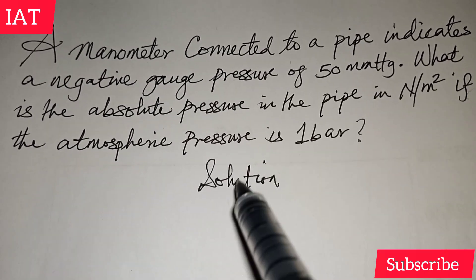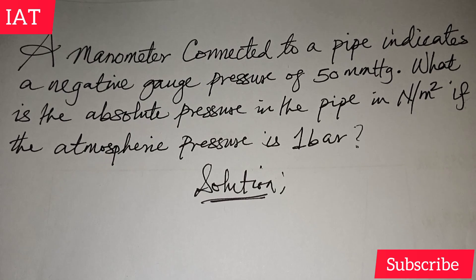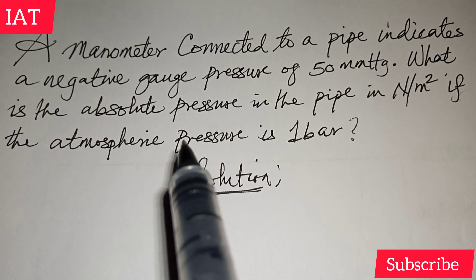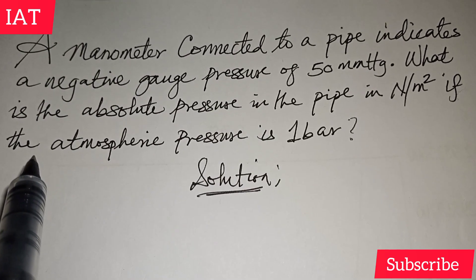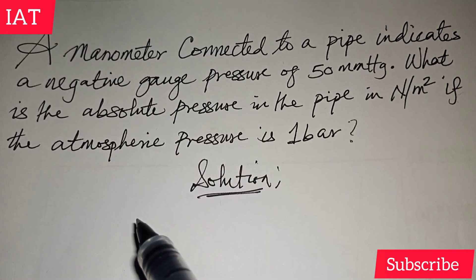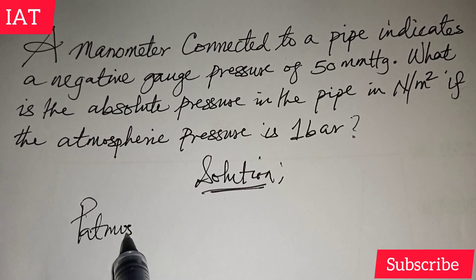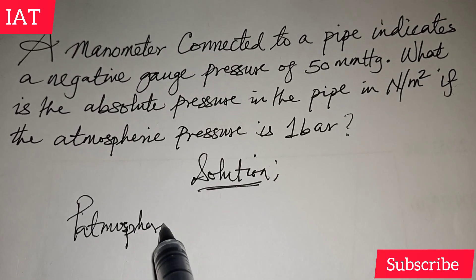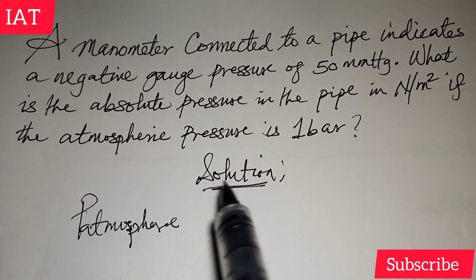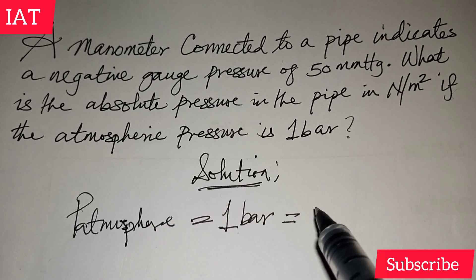Before we get started, we need to state the necessary parameters associated with this, which is always the way I want to go about physics problems. If you check holistically, from this last line they say if the atmospheric pressure is one bar. In several textbooks, people have a way of representing atmospheric pressure. You can write it like P_atmosphere, and this equals one bar.